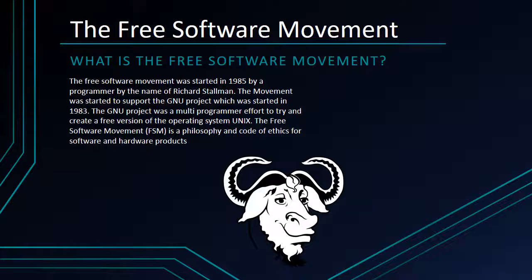So what is the free software movement, and what do I mean by free software? When we talk about free software in regards to the movement, we mean free as in freedom, not in cost. Free software is software that respects the user's freedom. The free software movement started in 1985 by a programmer by the name of Richard Stallman, to support the GNU project, which started in 1983. The GNU project was a multi-programmer effort to create a free version of Unix. The free software movement is a philosophy and code of ethics for software and hardware alike.